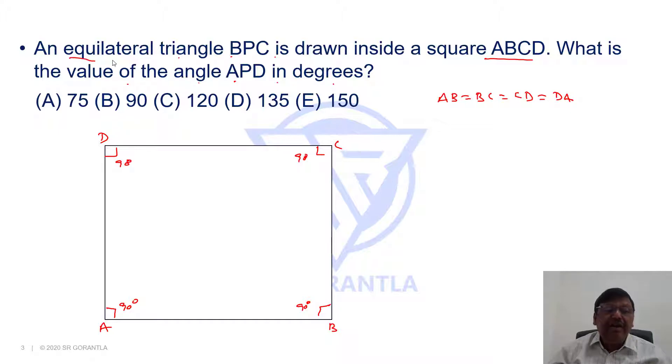Now, an equilateral triangle BPC is drawn here. So BPC means obviously one of the sides is BC. So let's say there is a point P here. If you join this, this BPC is an equilateral triangle.